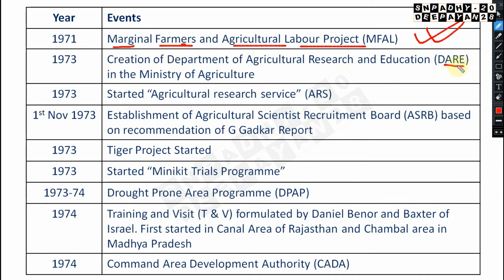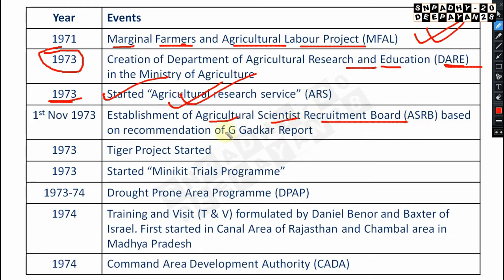In 1973, the Department of Agricultural Research and Education (DARE) was established under the Ministry of Agriculture. Also in 1973, the Agricultural Research Service (ARS) was started, and the Agricultural Scientists Recruitment Board (ASRB) was established based on the G. Gudkar Report — very very important. Remember: ASRB established in 1973, based on G. Gudkar Report. Also in November 1973, Project Tiger was started.